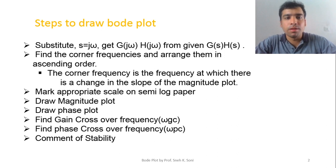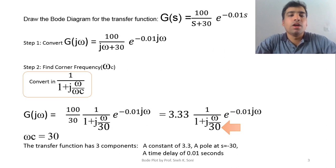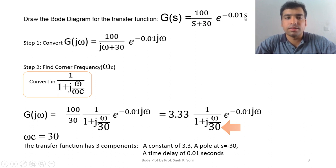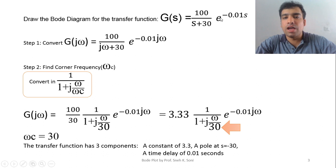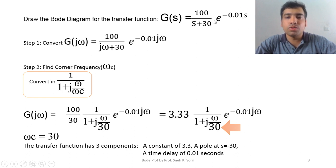Let's start with another problem. The question is: draw the Bode diagram for the system transfer function G(s) = 100 / (s + 3) * e^(-0.1s). We have already done the Bode plot for 100/(s+3); I have just added one extra term here — e^(-0.1s) — which is basically a delay term. e^(-tds) where td stands for the delay time. So this is a first-order system plus delay.